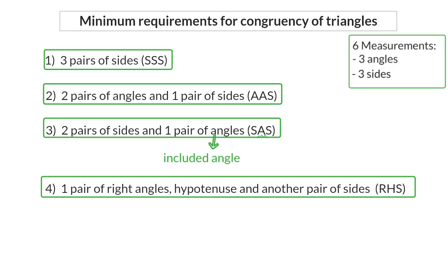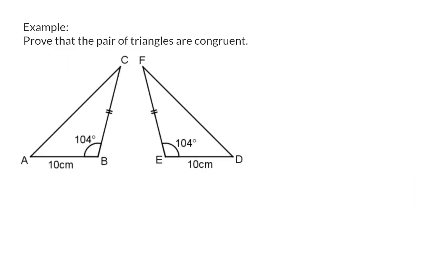Let's look at an example of how we can use these minimum requirements to prove a pair of triangles congruent. To prove triangles congruent, we need to find some of our minimum requirements. Here we are given that both triangles have a 10 cm side, so we have a pair of sides. Both triangles have an angle of 104 degrees, giving us a pair of angles. And it is indicated that side CB is the same length as FE, which is another pair of sides. This satisfies one of our minimum requirements. Remember that the angle should be an included angle in this case, and here it is because B lies in between the two known sides.